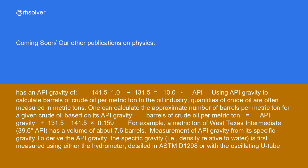Barrels of crude oil per metric ton equals (API gravity plus 131.5)/(141.5) times 0.159. For example, a metric ton of West Texas Intermediate, 39.6 degrees API, has a volume of about 7.6 barrels.